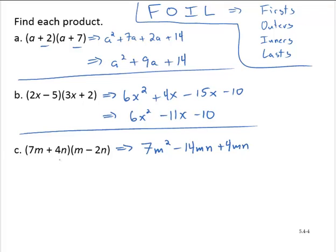And then the lasts, 4n times negative 2n, that's minus 8n². Combining like terms yields 7m² - 10mn - 8n².